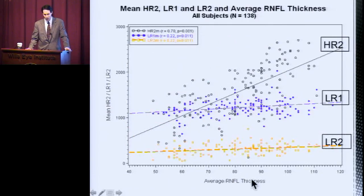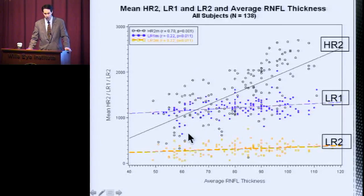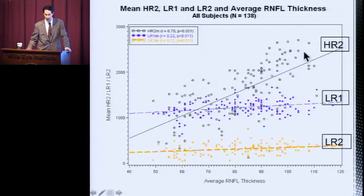This gives you a sense, as we look across average RNFL thickness for all of these subjects from 40 to 120 microns, here we have the means of these three different parameters. You can see that LR1 and LR2 are not strongly tied to the thickness of the neurofiber layer. However, HR2 — the high reflectivity second analysis parameter — does show an increase as the neurofiber layer gets thicker.